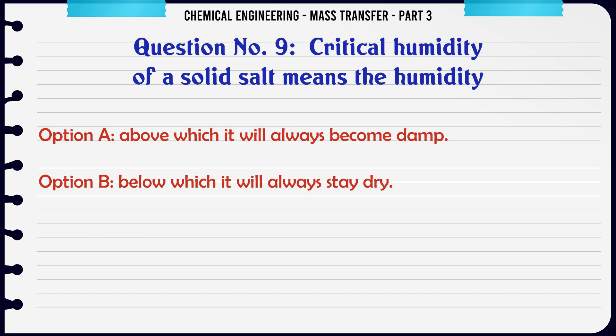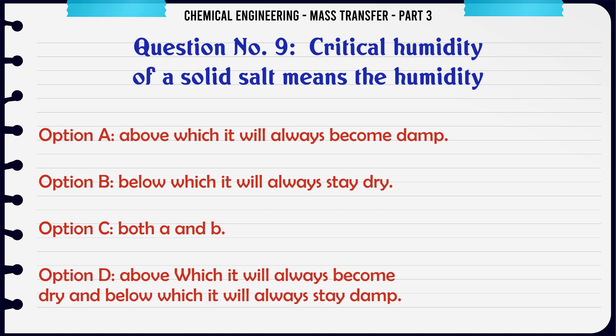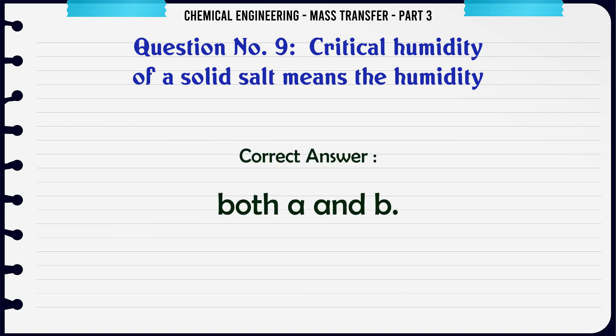Critical humidity of a solid salt means the humidity: A) above which it will always become damp, B) below which it will always stay dry, C) both A and B, D) above which it will always become dry and below which it will always stay damp. The correct answer is: both A and B.